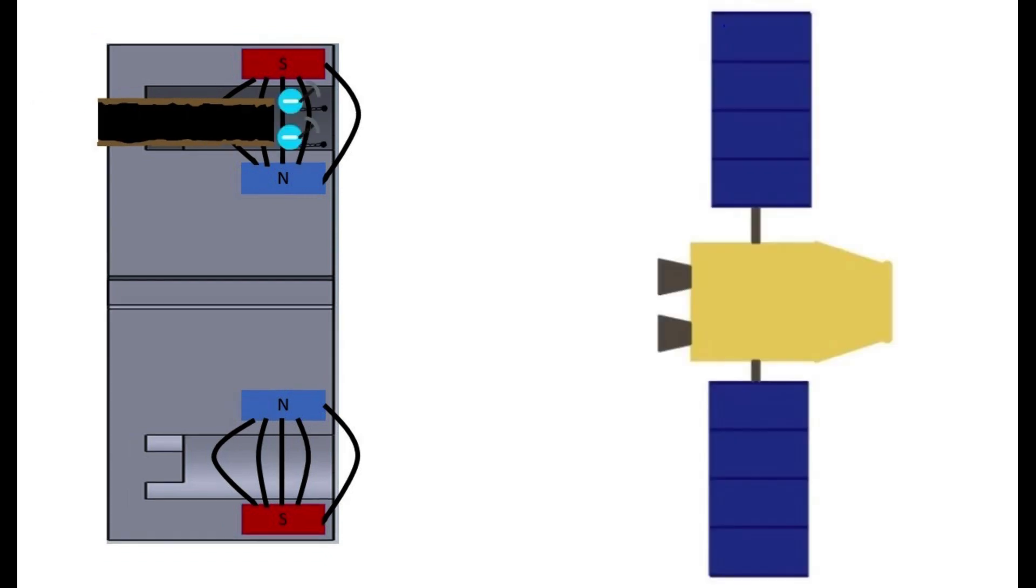Let's turn to the problem encountered by DART, where the electric propulsion system significantly affected other parts of the spacecraft. This issue shows that if we wanted to fly a spacecraft with Hall thrusters, we would need a model to predict how the thruster would affect the spacecraft.